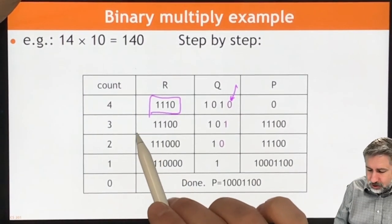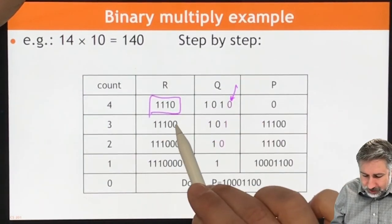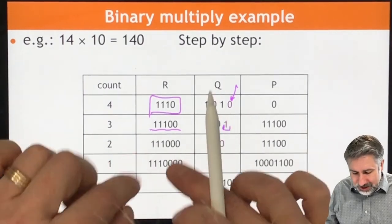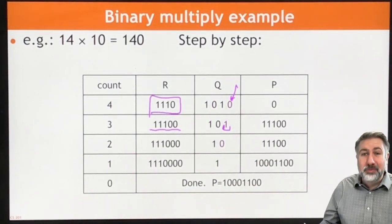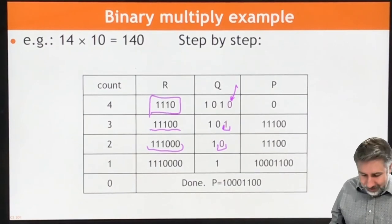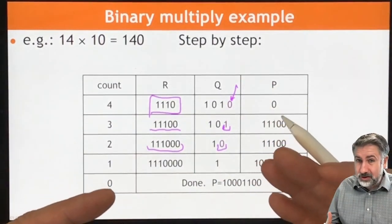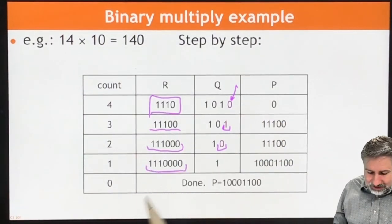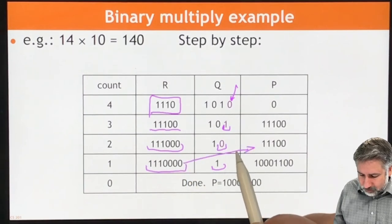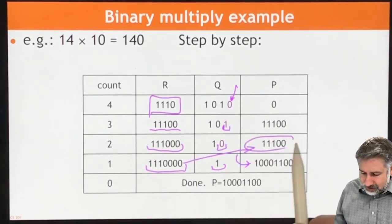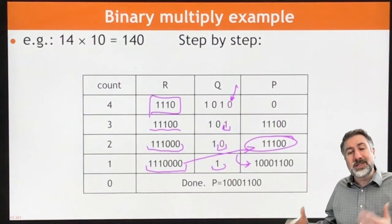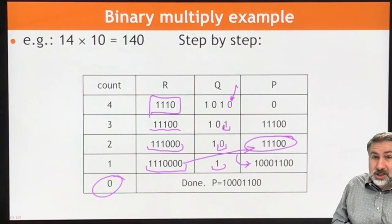Now we're looking at the twos position. The twos bit says we do need to add in this location, so we take that and add it to the partial product. Now the partial product has some value. Then we look at the fours position — that value of the multiplicand times four — and we don't add, but we still shift. Then we look at the eights position, and the eights bit says yes, we do add it. We add the eights result to the current partial product to get our final result. We do the final shift, the count reaches zero, and we're done.